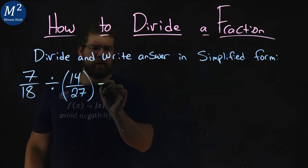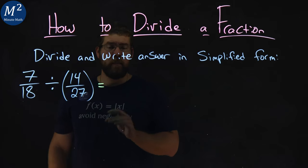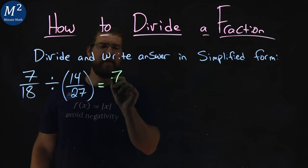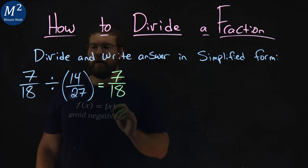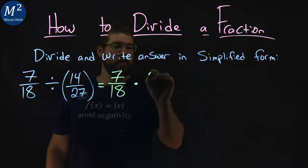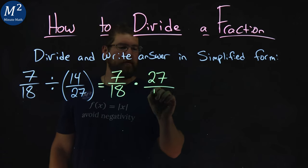Now, one thing we remember from before, multiplying or dividing a fraction is the same as multiplying the reciprocal. So 7 18ths divided by 14 over 27 is the same thing as multiplication of the 27 over a 14.